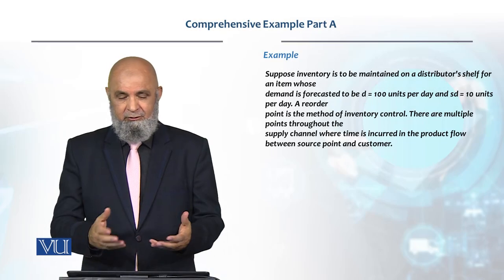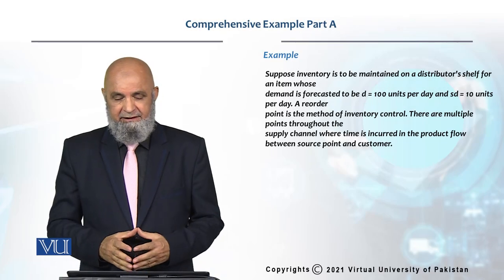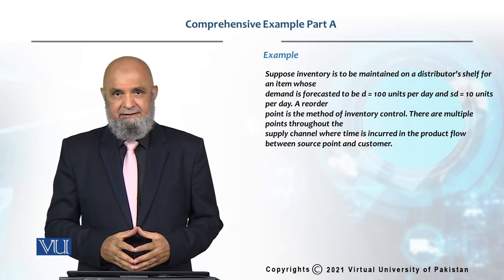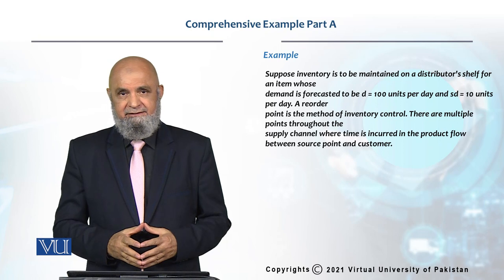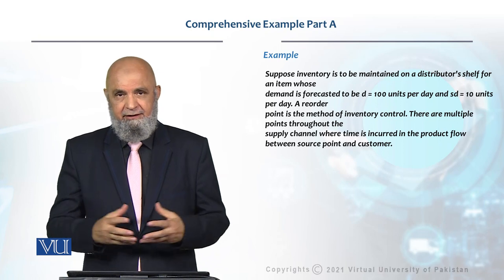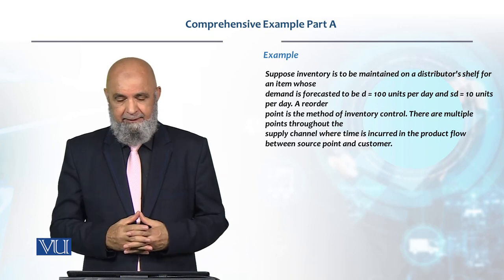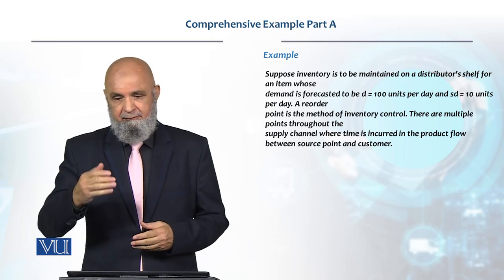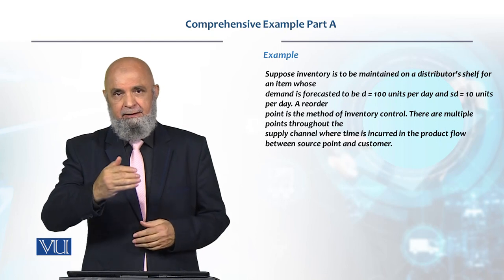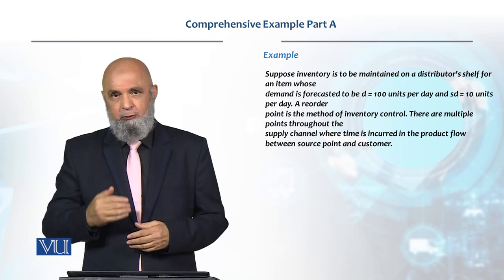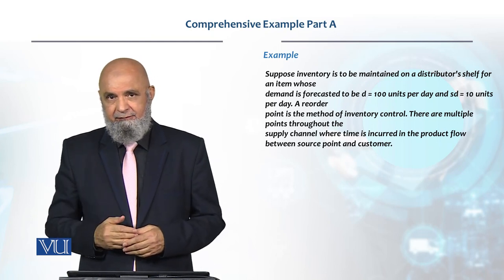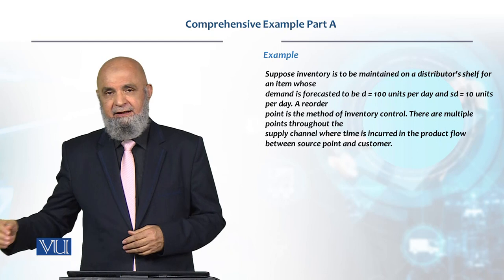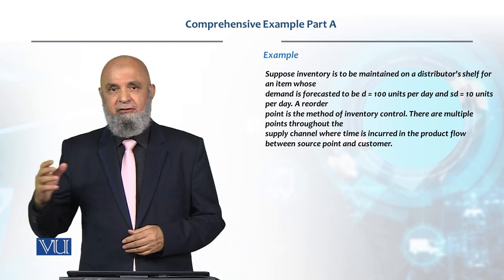Let's look at a comprehensive example. This supply chain starts at the production plant, goes to the pool area, and then goes to the distributor.